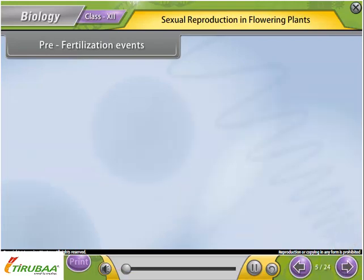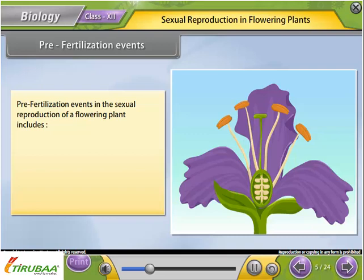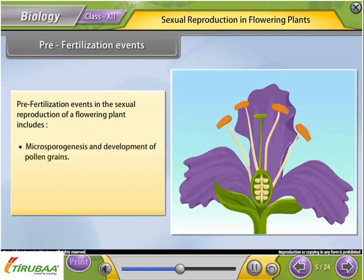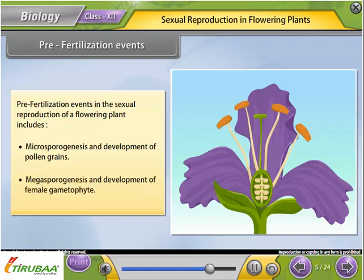Pre-fertilization events in the sexual reproduction of a flowering plant include microsporogenesis and development of pollen grains, and megasporogenesis and development of the female gametophyte.